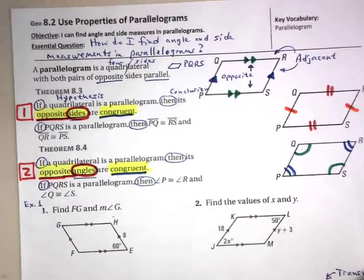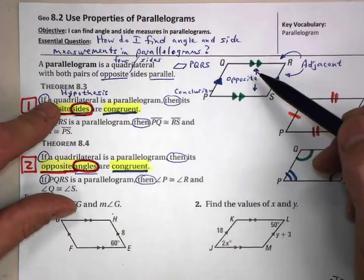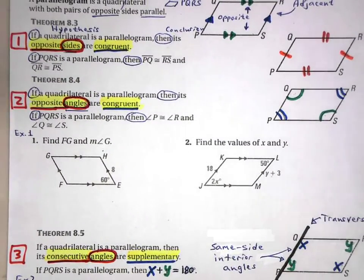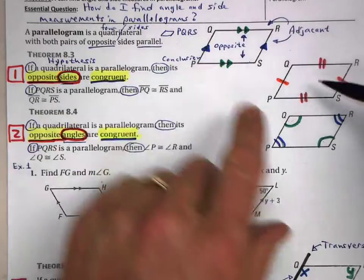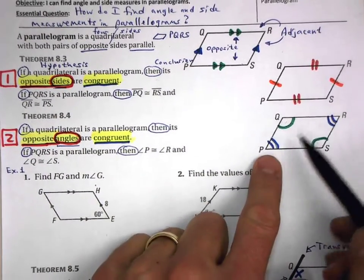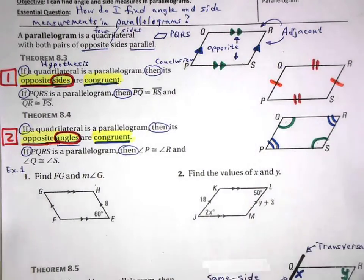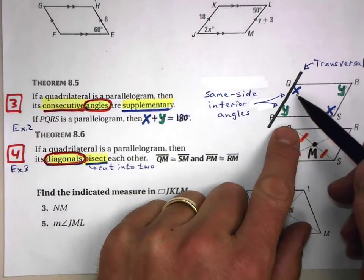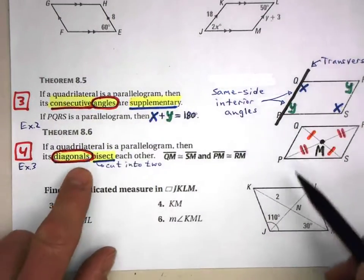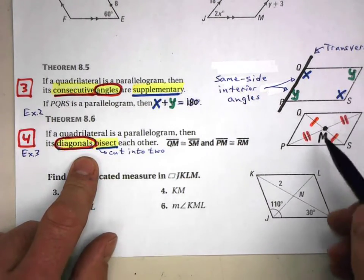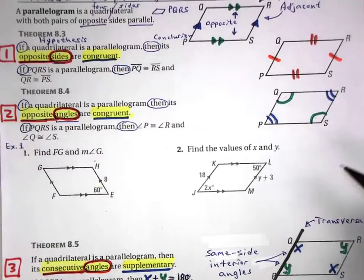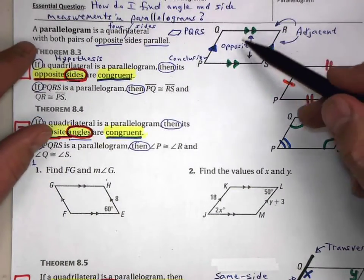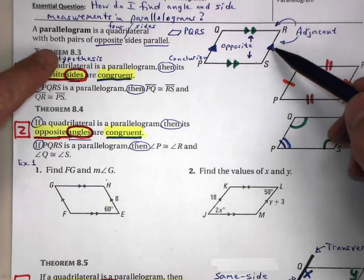Remember back in 8.2, we were told that it is a parallelogram, and then we found or discovered four different characteristics about those parallelograms. If it is a parallelogram, then we know that its opposite sides are congruent, opposite angles are also congruent, consecutive angles are supplementary, and the diagonals bisect each other. So those are four characteristics that are true once we are told that a quadrilateral is a parallelogram — if parallelogram, then each of these four things are true.